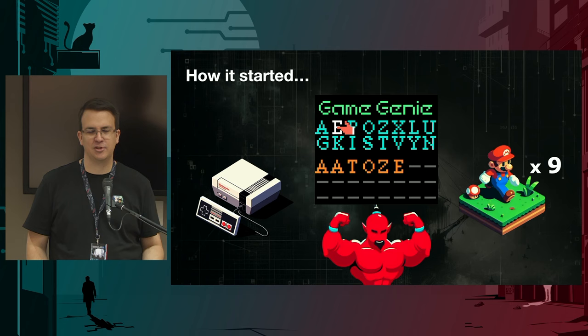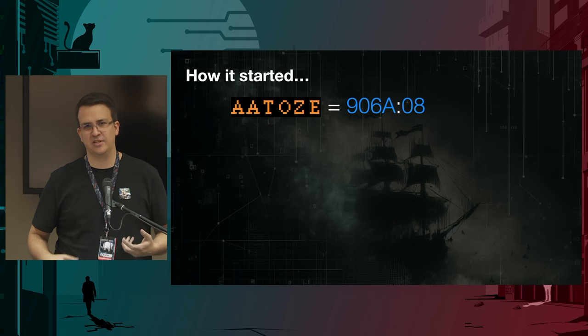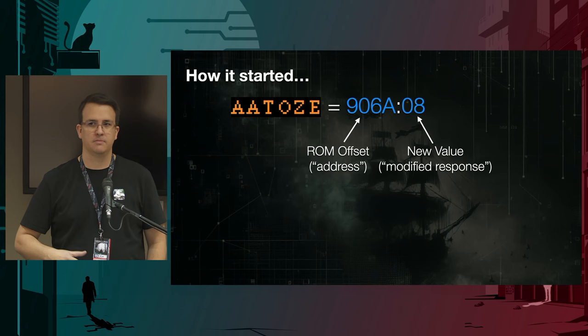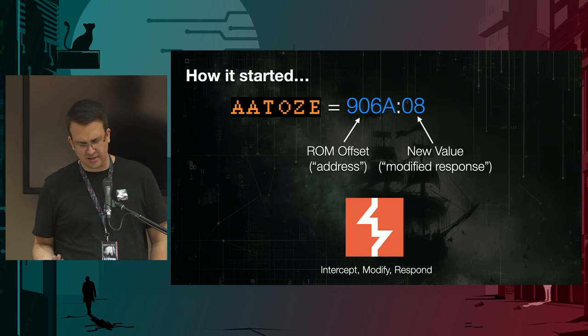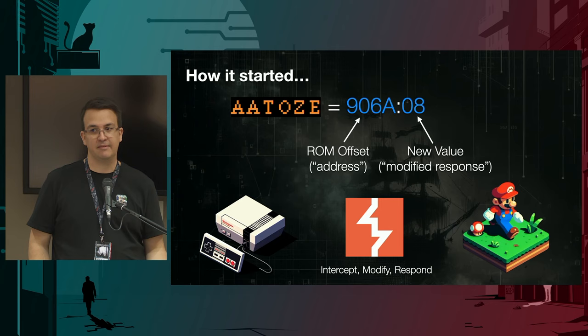I was incredibly young. I didn't understand how it worked. I just knew you plugged the game cartridge into the Game Genie and the Game Genie into the Nintendo. I've since learned that that code is actually just an encoding of an address or offset in the game cartridge and a value that should be used in place of the original value. It's a little bit like Burp Suite, because it handles the request to the cartridge's memory or ROM, but when it identifies that certain address, rather than returning the correct number of lives, it returns a different value, modifying the response.